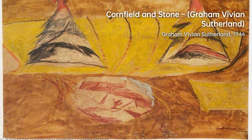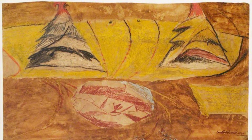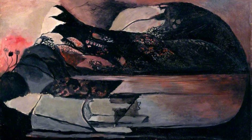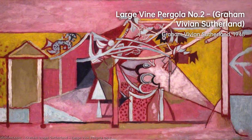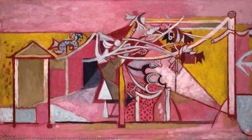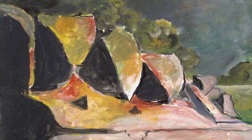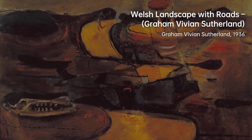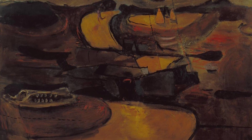Graham Sutherland, the renowned British painter, was born in Streatham, London. He grew up in a creative household, with both of his parents being amateur painters and musicians. Sutherland attended Homefield Preparatory School and later Epsom College in Surrey. Initially, he embarked on an engineering apprenticeship at the Midland Railway Locomotive Works in Derby. However, after a year, Sutherland convinced his father that his true calling was in art. In 1921, he enrolled at Goldsmiths School of Art, as there were no vacancies at his first choice, the prestigious Slade School of Fine Art.